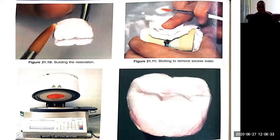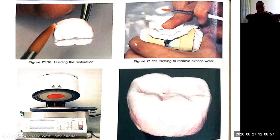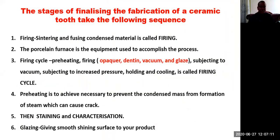This is another example showing the ceramist laying the ceramic on the metal framework. On the top right image, tissue paper is used to remove excess water, then it is taken to the porcelain furnace. Finally, on the bottom left, you can see the finished ceramic crown produced.